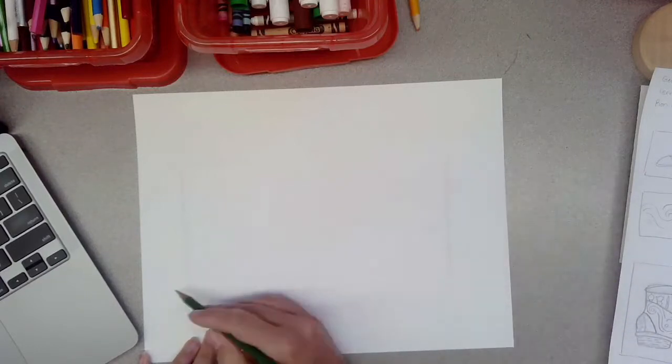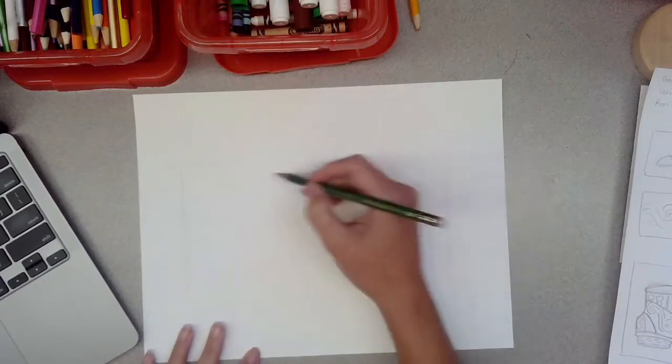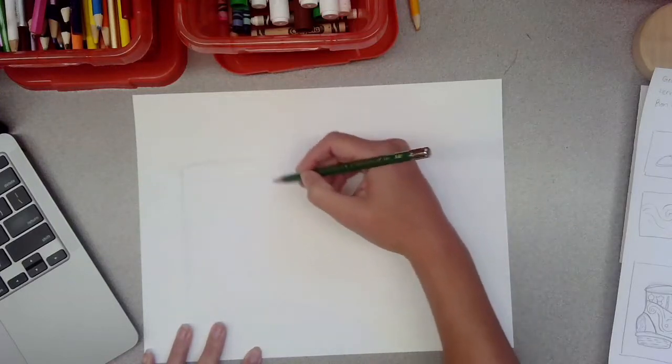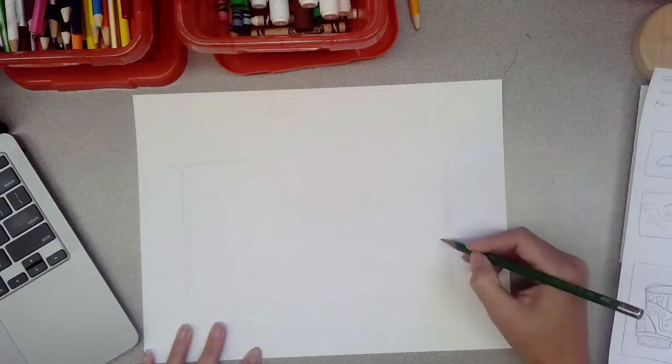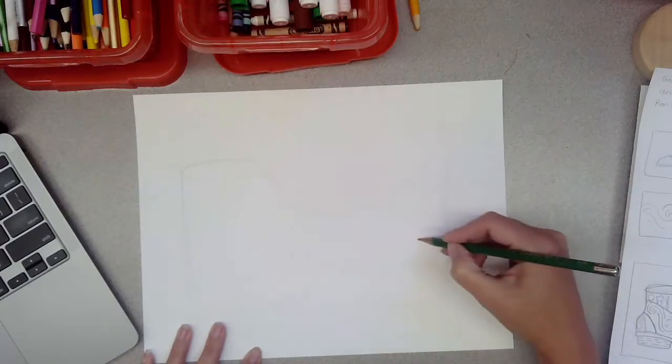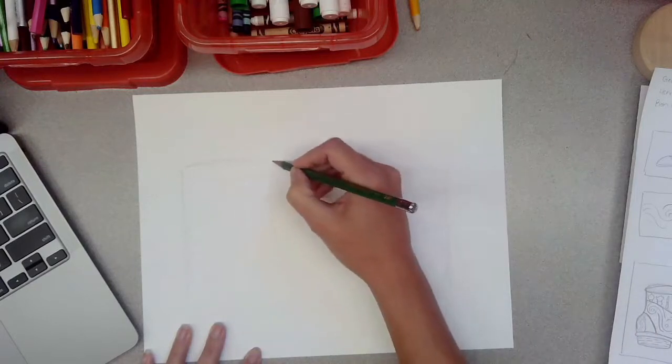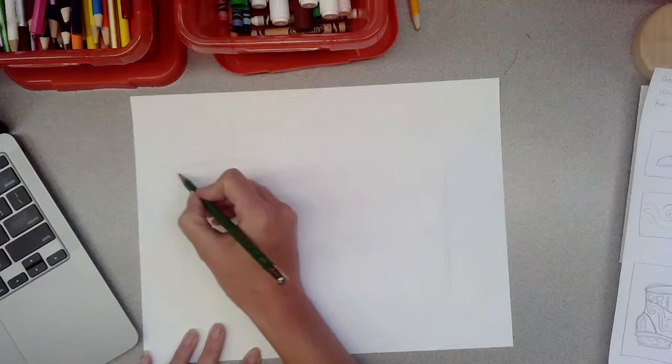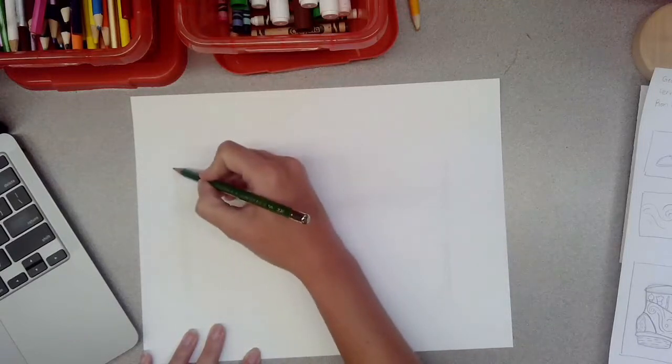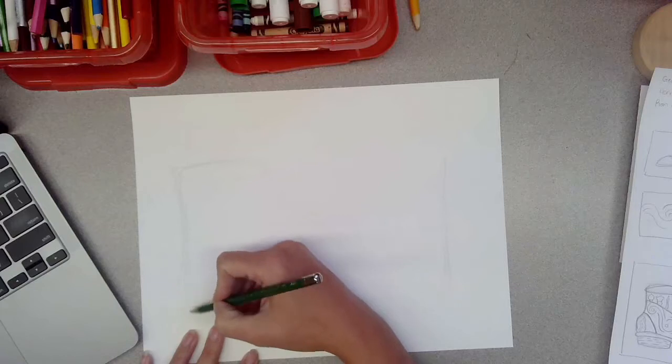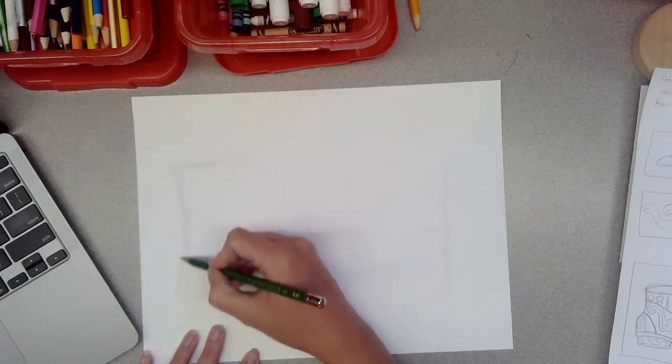From there, I'm going to start sketching with loose lines that are light. We all have different techniques when we draw. I do these little light sketch marks until I get what I want.